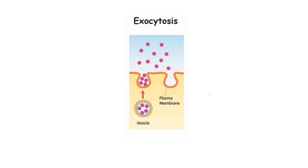Exocytosis involves packaging substances into vesicles within the cell, and this usually happens with the work of the Golgi apparatus. When those packaged vesicles fuse with the cell membrane, those substances are going to be released into the extracellular space.